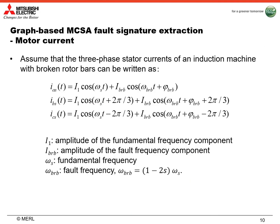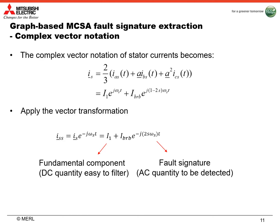To introduce our proposed graph-based MCSA fault signature extraction method, let's assume we have obtained the motor current by either experiments or simulations. For an induction machine with broken rotor bar fault, the three-phase stator current can be expressed using these equations, where I1 is the amplitude of the fundamental frequency component, and IB is the amplitude of the fault frequency component. Omega_S is the fundamental frequency and Omega_B is the fault frequency component. Once we have the three-phase stator current, we can use complex vector notation to represent it. By applying the vector transformation, we can convert the fundamental component into a DC quantity, which is easy to filter out, and the fault signature remains as an AC quantity.